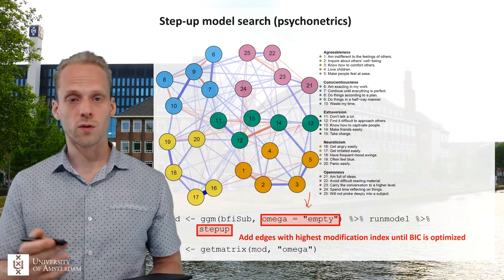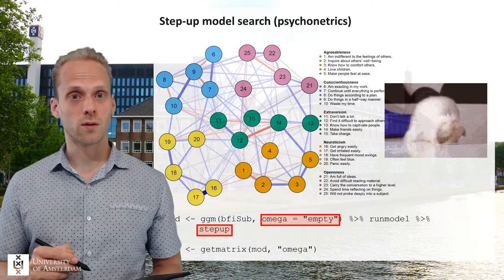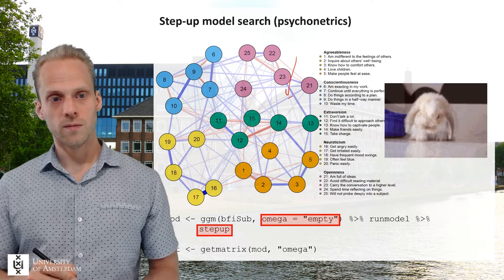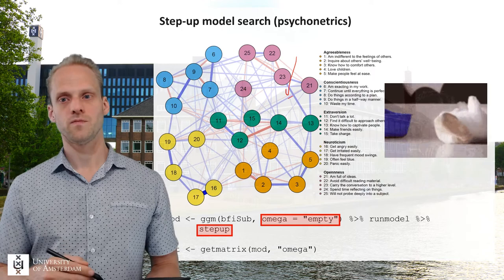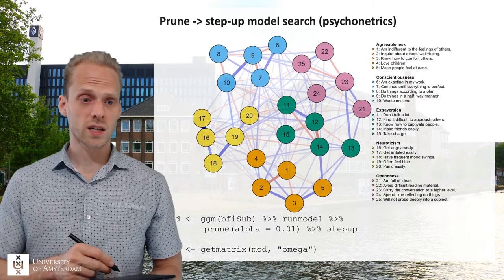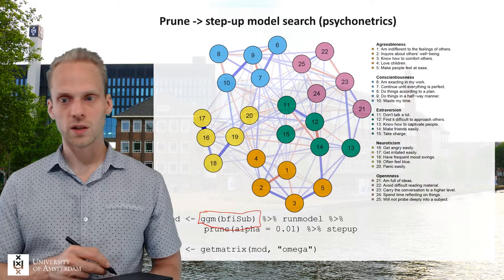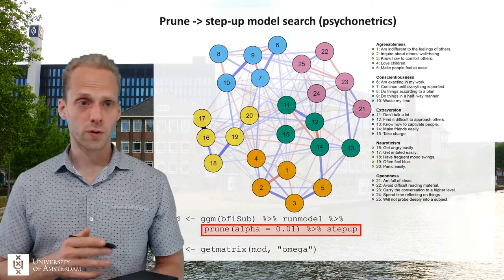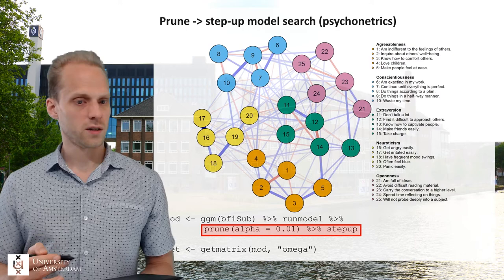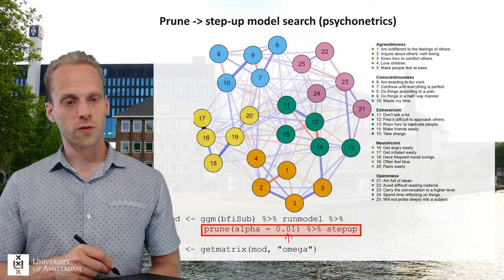The only downside is it is very slow, because we start with an empty network and there are quite a lot of edges to include. So get ready to be a bit sleepy if you do this. A faster way to do this in psychonetrics is to instead start with a fully connected network. Here we don't specify omega equals empty, and we add the prune function as well. So we do a prune and then a step-up model search, combining these two functions. We first remove all edges that are not significant — maybe also applying a Bonferroni correction — and then follow that up with step-up.